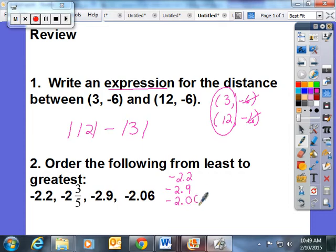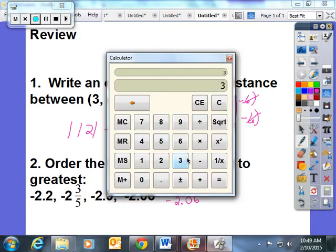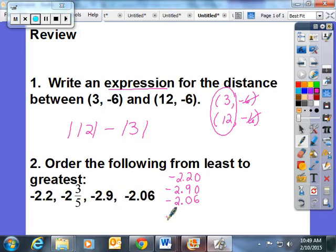I'm going to fill in missing places with zeros, and then I'm going to pull out my calculator and punch in 3 divided by 5. That gives me .6, so I know that's negative 2.60.